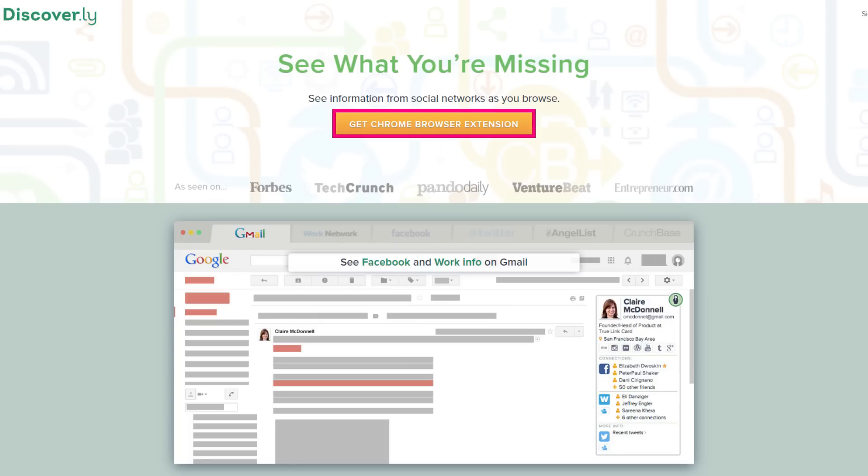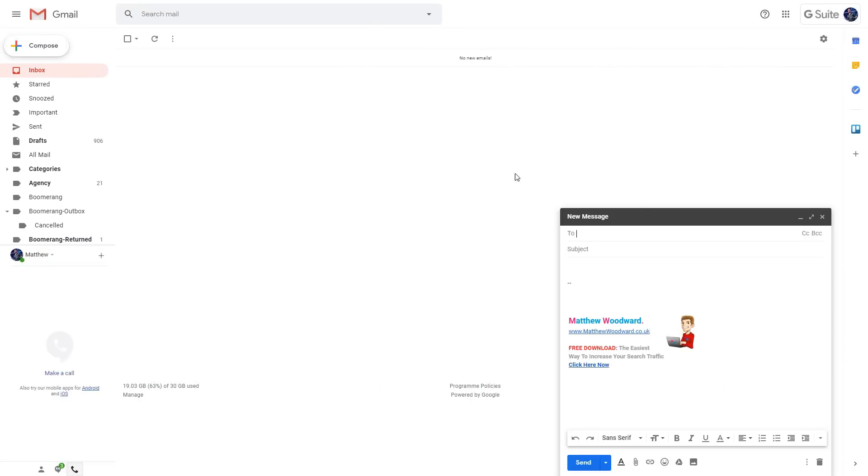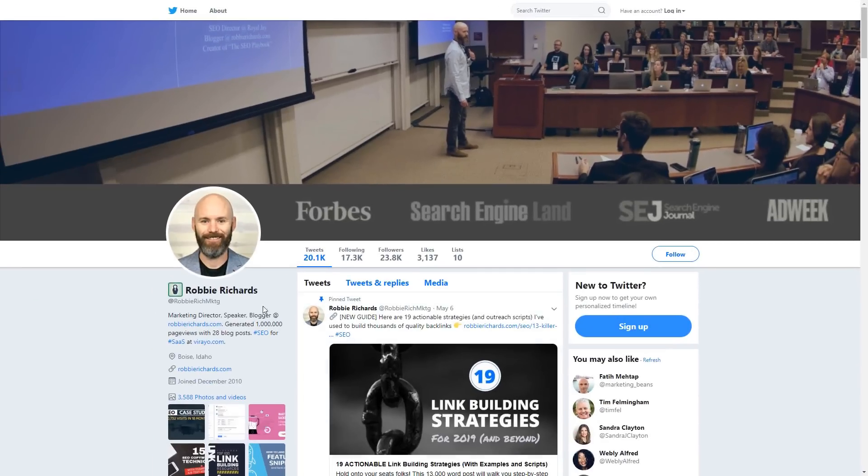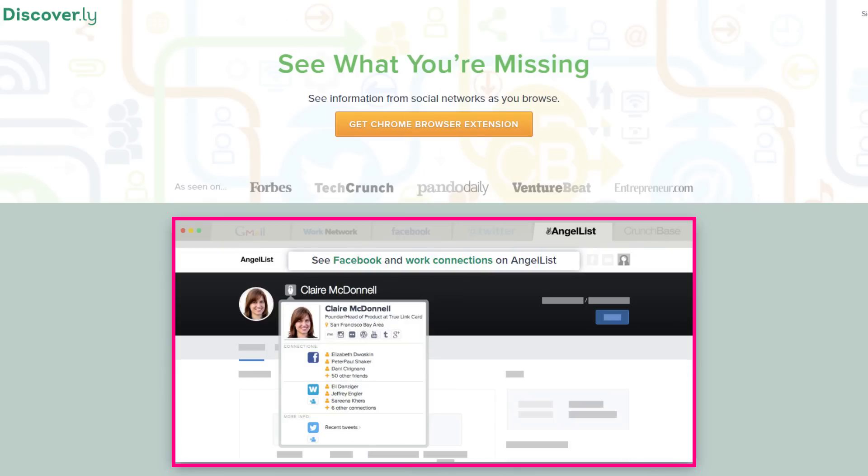Discoverly allows you to see tons of useful information about the person you're writing to. It shows you their photos, social media profiles, job titles, shared connections and more.